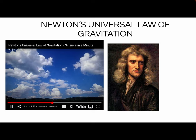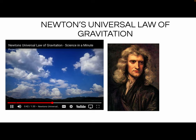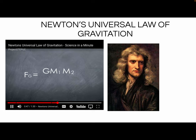Sir Isaac Newton mathematically modeled this relationship, referred to as Newton's Universal Law of Gravitation. It states that the force of gravity between two objects is equal to the universal gravitational constant times the mass of each object, all divided by the square of the distance between the two objects. G represents the universal gravitational constant, m1 and m2 are the masses of the two objects, and r is the straight-line distance between the centers of the two objects.